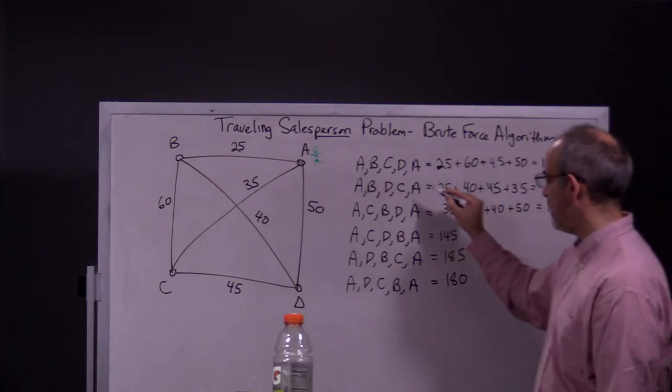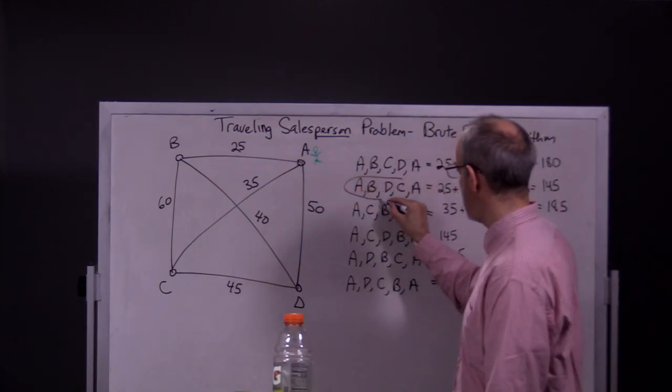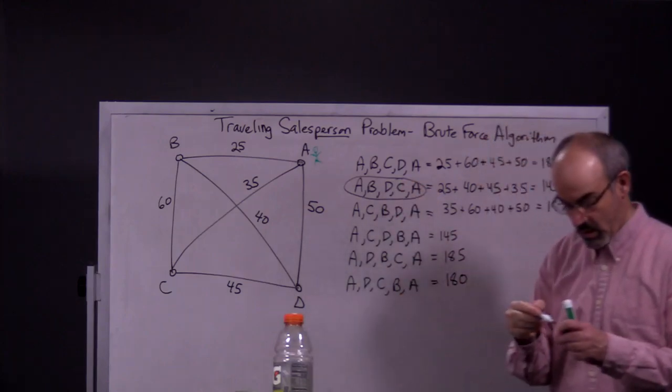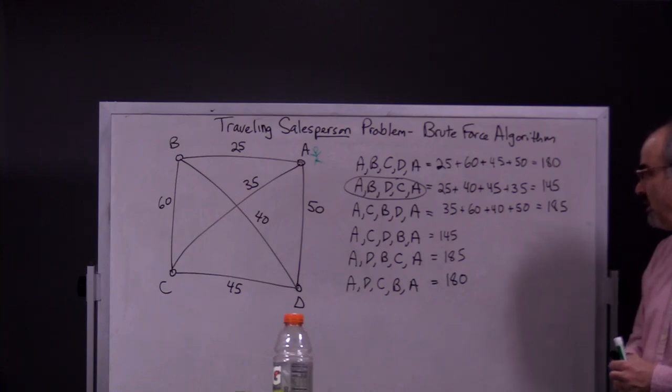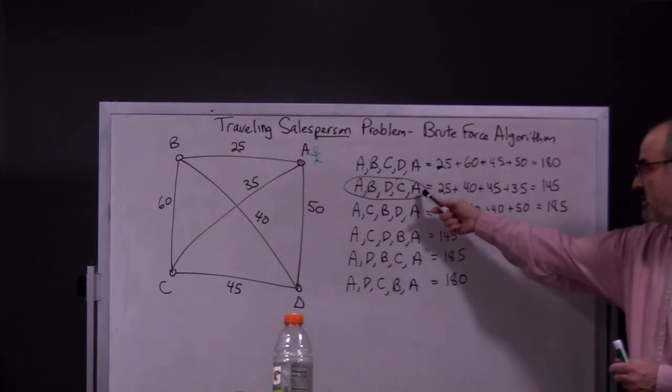So, the best route, using the brute force algorithm, is A to B, B to D, D to C, and C to A.